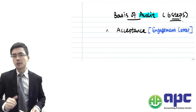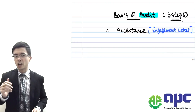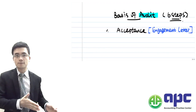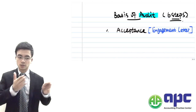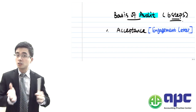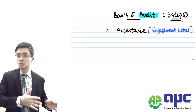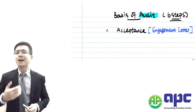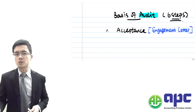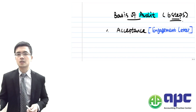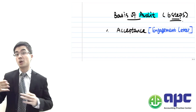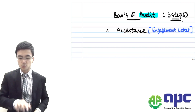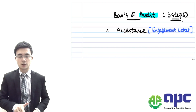The engagement letter actually details who does this audit, the time period, and also the fees that are going to be charged onto the client's company, as well as the responsibilities of the auditors and the management within the client's company. So that's within the acceptance stage.